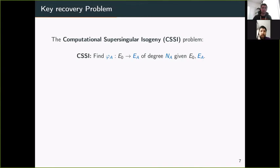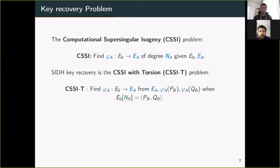The hardness of this problem depends on the computational supersingular isogeny CSSI problem, where one is given two curves E₀ and EA. We know there's a degree Na isogeny between them, and the goal is to find this special isogeny. However, in SIDH more information is given: not only E₀ and EA and degree Na, but also φA(PB), φA(QB). So you know the secret isogeny on the Nb-torsion. We'll call this the CSSI.